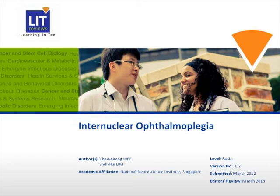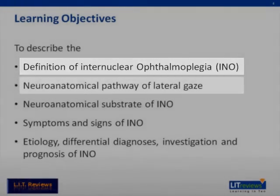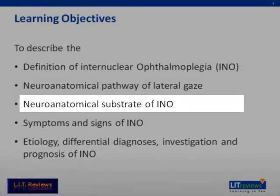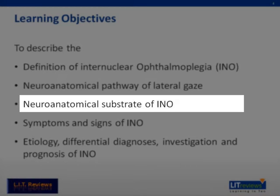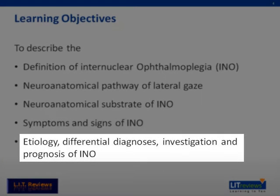This voice-annotated presentation is on internuclear ophthalmoplegia, or INO. At the end of this presentation, you should know what INO is, the neuroanatomical pathway of lateral gaze, the neuroanatomical substrate of INO, the symptoms and signs of INO, its etiology, prognosis, as well as the investigations and a differential diagnosis.